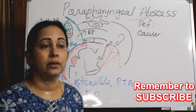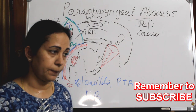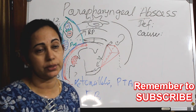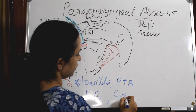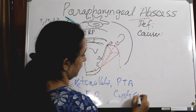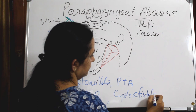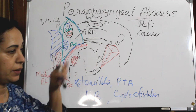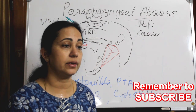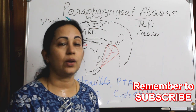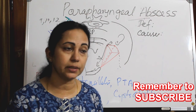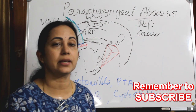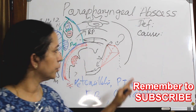Additional causes include trauma from nasotracheal intubation, mastoiditis, and branchial cysts and fistulas of branchial origin. Risk is higher in immunocompromised patients such as those with HIV/AIDS, long-standing uncontrolled diabetes, chronic granulomatous disorders, non-Hodgkin's lymphoma, and aplastic anemia.